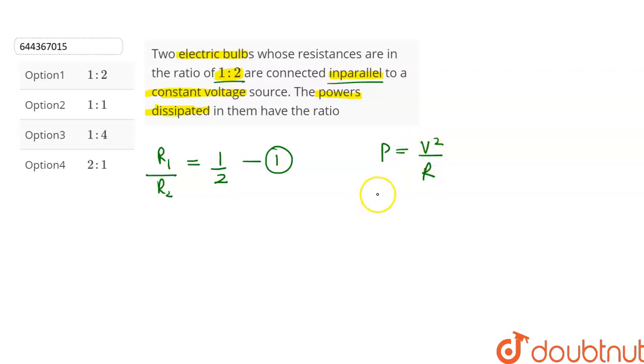Let's calculate the power across the first bulb. Let it be equal to P1. It will be equal to V squared upon R1. And the power across the second bulb, let it be P2, will be equal to V squared upon R2.